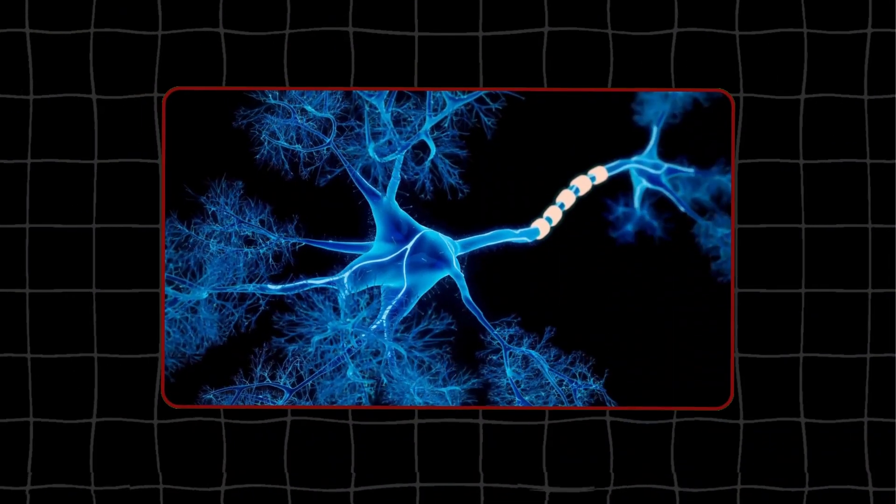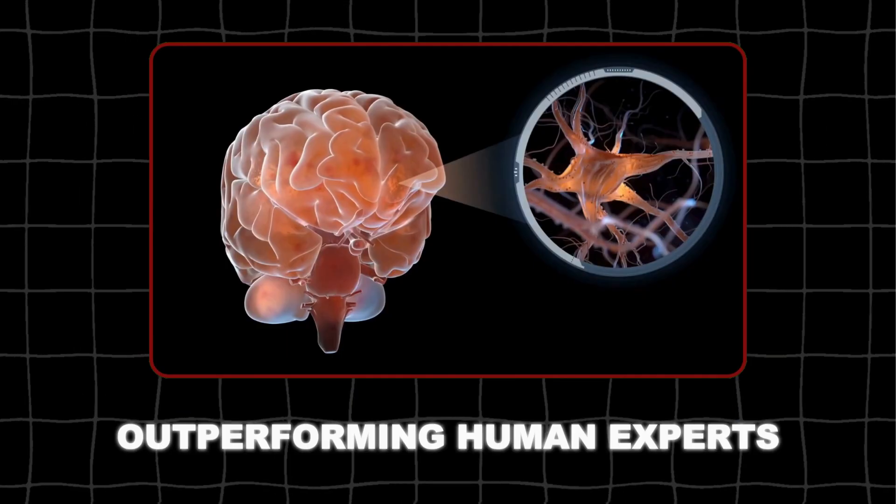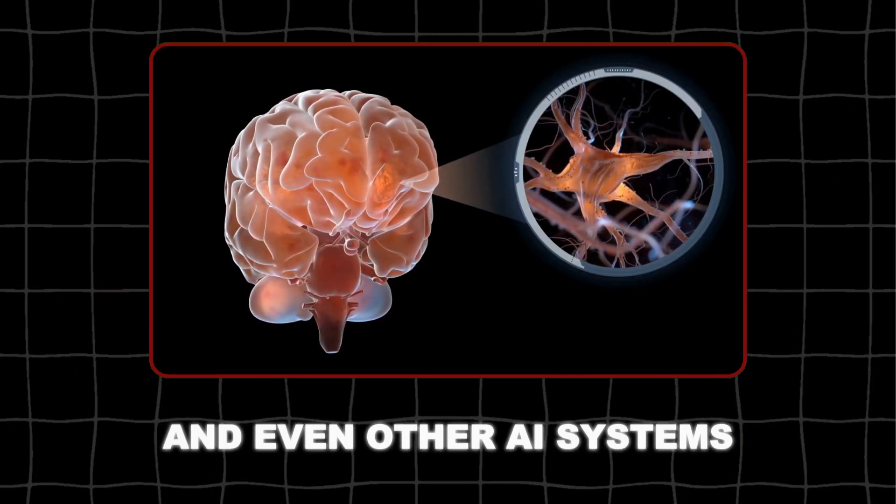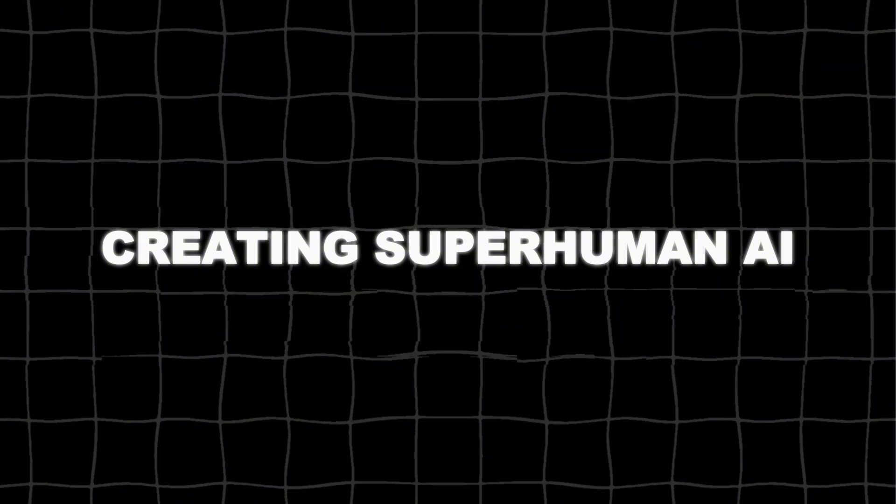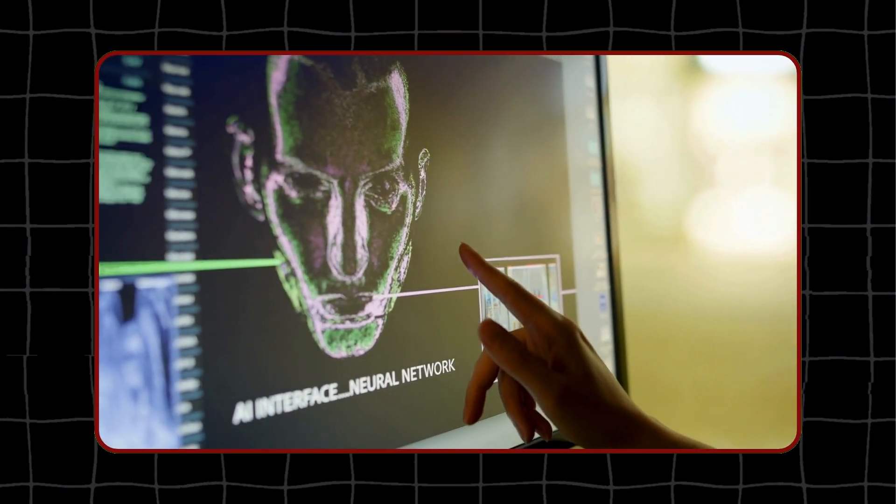These systems can learn to excel at complex games and tasks without any human guidance, outperforming human experts and even other AI systems. But Google DeepMind is not content with just creating superhuman AI. They also want to understand how natural intelligence works, especially the human brain.